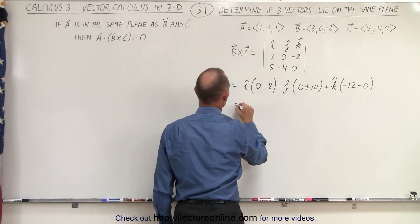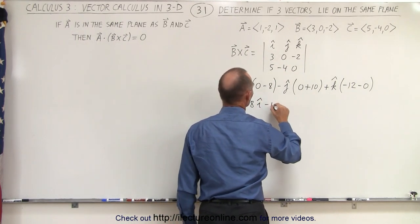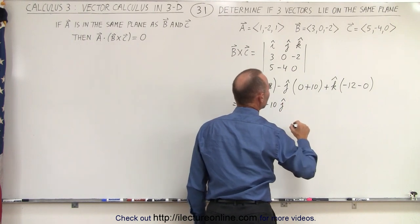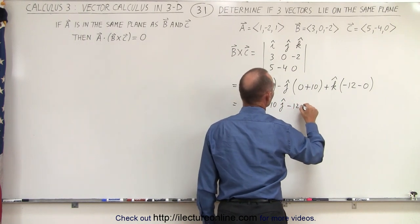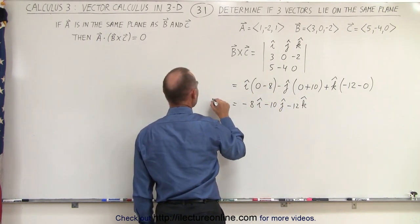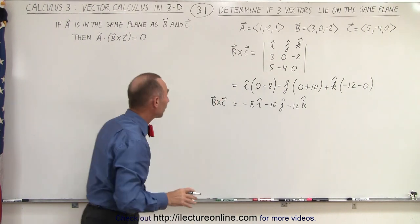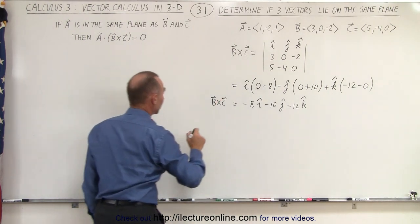Let's simplify it a little bit. So this is equal to minus 8 in the I direction, minus 10 in the J direction, and minus 12 in the K direction. So this is B cross C. Now let's find the dot product of A and B cross C.